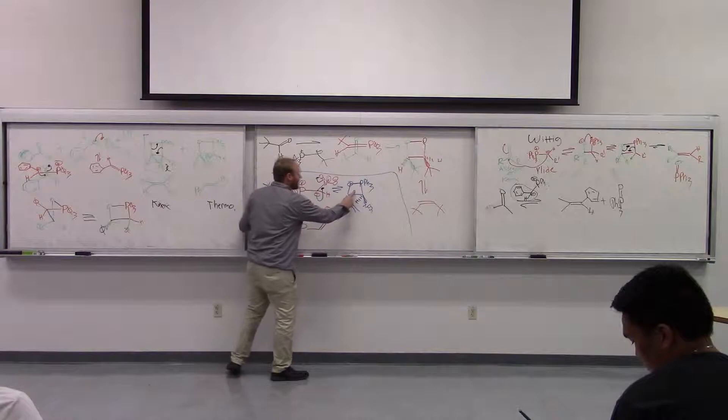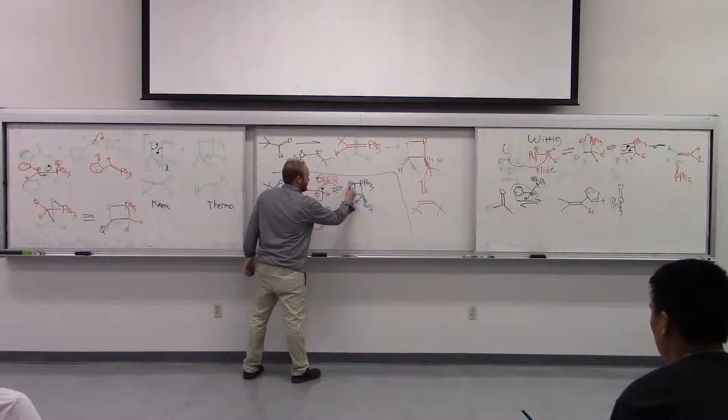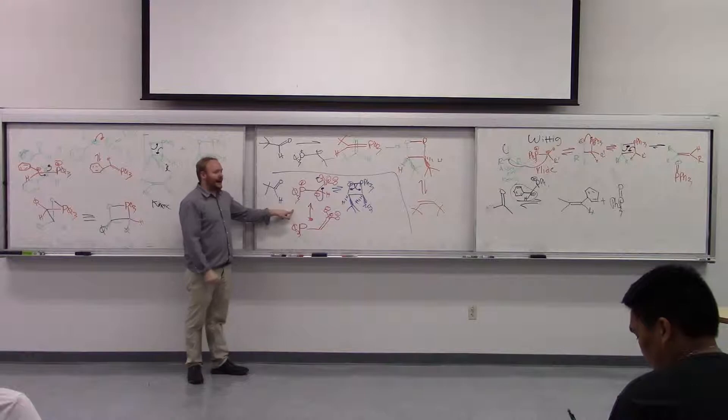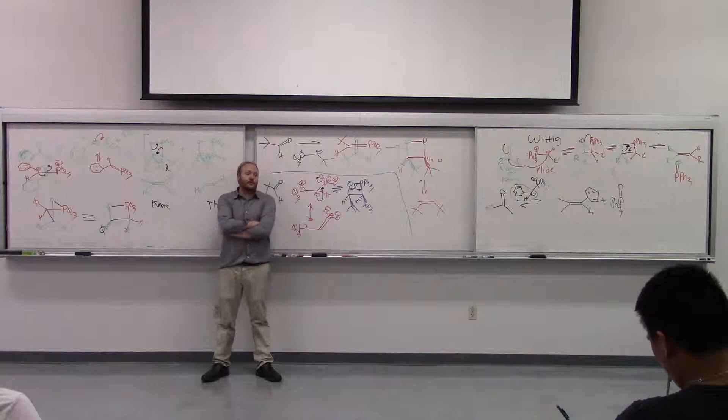In this case, this really sterically hindered phosphetane can go forward and give us product. However, it can also go back now. And since we have a big steric hindrance, it will just do the reverse reaction to go back here. And then it will go back and forth. And then eventually, it will filter through the more thermodynamically stable transition state.